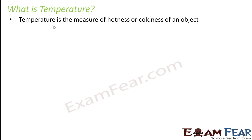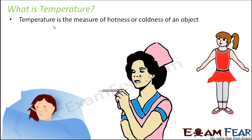Temperature is the measure of hotness or coldness of an object. It can precisely tell us how hot an object is. For example, with body temperatures, if one reading is 100 degrees and another is 98 degrees, the object at 100 degrees is hotter. Using the values of temperature, we can decide which object is how hot and which is how cold.